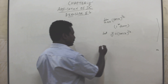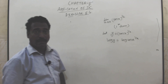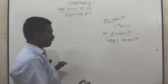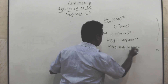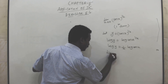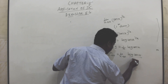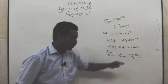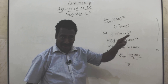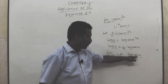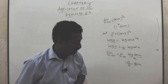Taking log on both sides: log y = log(cos x power (1/x)). Bring (1/x) to the front: log y = (1/x)·log(cos x). Taking limit x tends to 0: log(cos 0) = log 1 = 0, and x = 0, so we have 0/0 form.